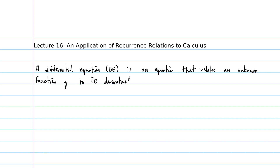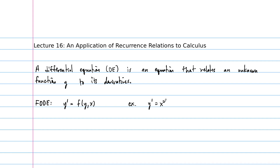We're going to study just very simple differential equations here. The kind we're going to study will either be first order or second order. A first order differential equation — FODE — just means that we can write down a formula for the first derivative Y prime as some function of Y and X. For example, our differential equation might be something like Y prime equals X squared times Y.